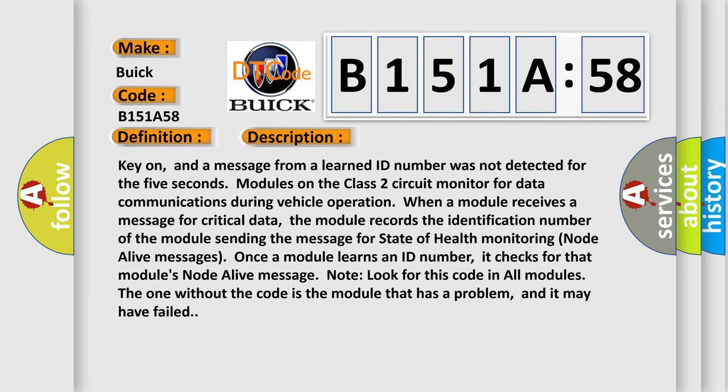Key on, and a message from a learned ID number was not detected for five seconds. Modules on the class 2 circuit monitor for data communications during vehicle operation. When a module receives a message for critical data, the module records the identification number of the module sending the message for state of health monitoring node alive messages.